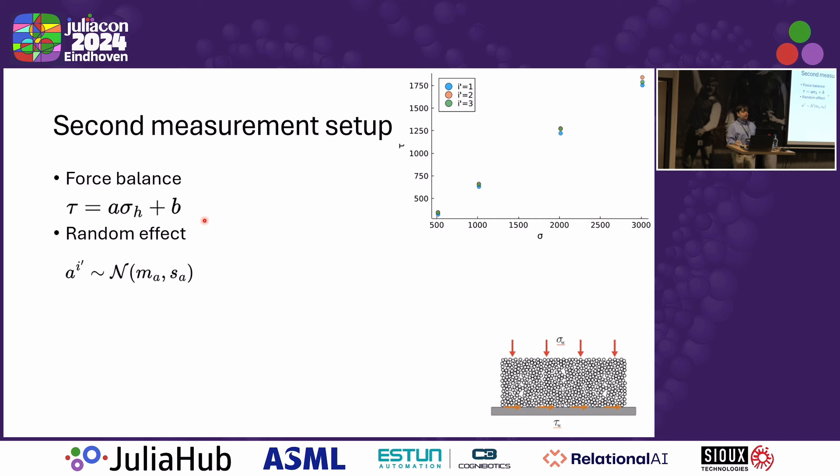We see that only considering the first measurement setup or considering only the second measurement setup will never allow us to estimate all three parameters of interest, the K, the A and the B. So we somehow need to come up with a way of joining these two data sets together. And this is why we used Bayesian statistics.